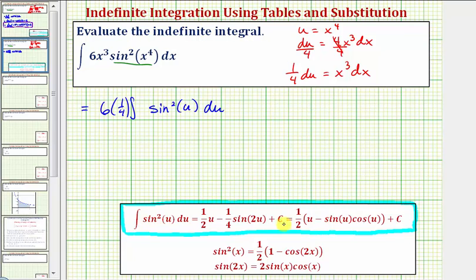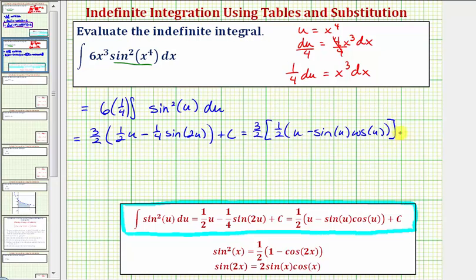And again, we'll show our antiderivative in both of these forms. So this is going to be equal to six-fourths is equal to three-halves. So we have three-halves times, using our first formula, we have one-half u minus one-fourth sine 2u, and of course we have plus c. We'll also show the antiderivative in this form here. So this would be equal to three-halves times one-half times the quantity u minus sine u times cosine u, and then plus c.